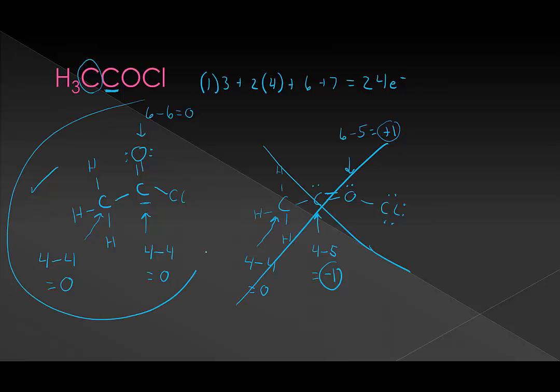So the one we have over here is definitely our best Lewis structure. One quick thing. We should add in our lone pairs on chlorine. It's very common to get a little bit lazy with that as we go along drawing these, but we always want to add them in at the end if you don't add them in sooner.